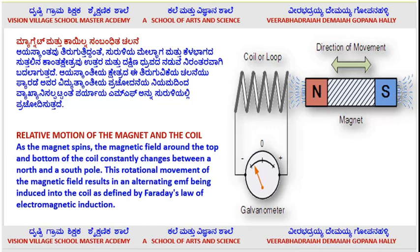Now coming to the important topic: relative motion of the magnet and the coil. There are two important things here. This is a circuit — a copper wire coiled like a spring — called a coil or a loop. It is connected to the galvanometer. Inside the ring or coil, if you move the magnet forward and backward, deflection occurs in the circuit. If you take the magnet backward, deflection will occur in the forward and backward direction — forward in one direction, backward in another direction.